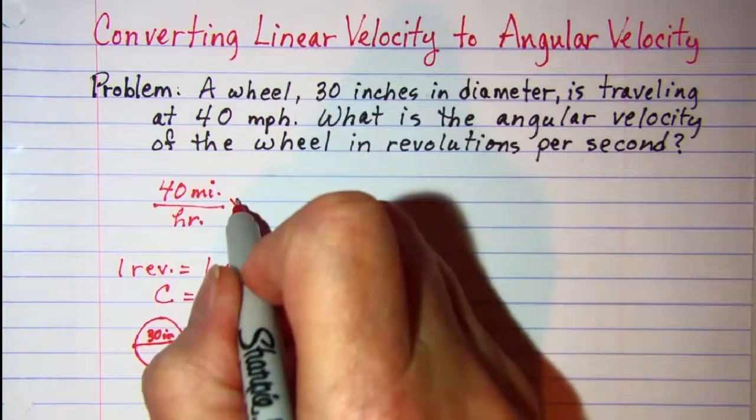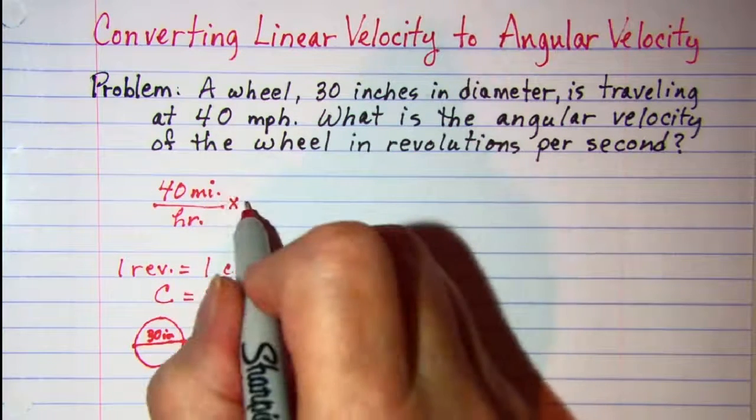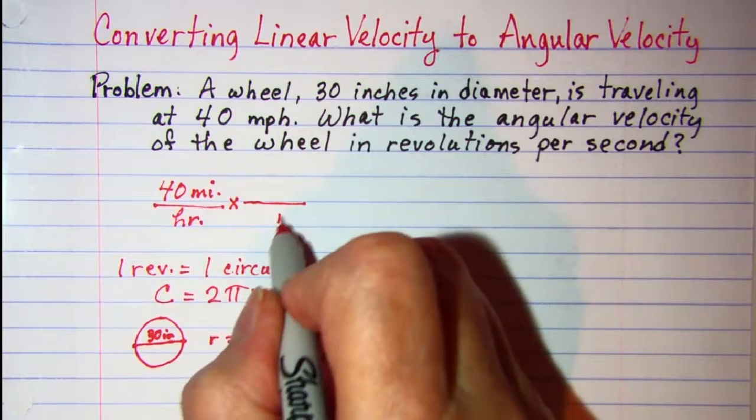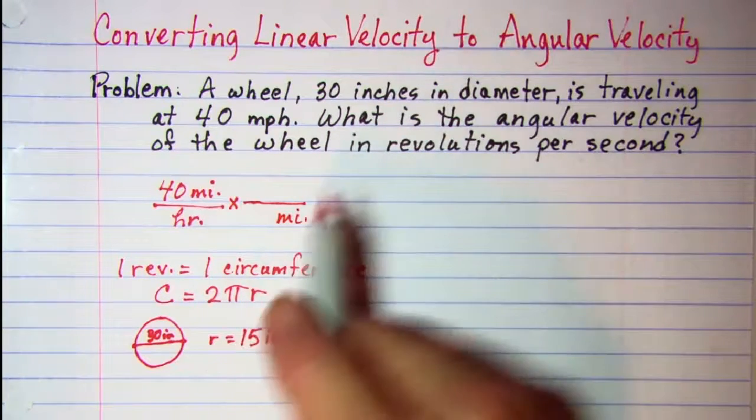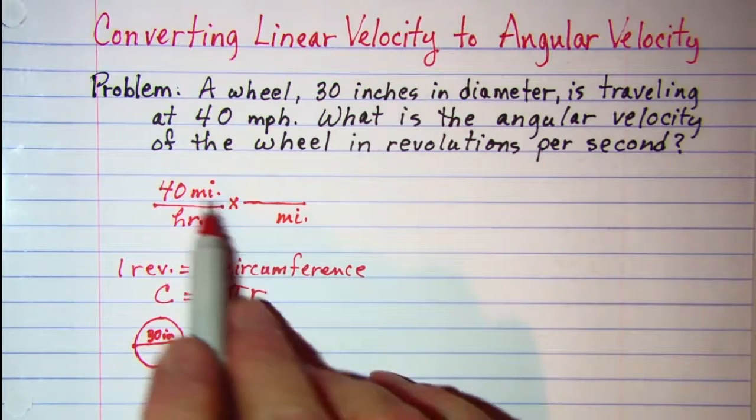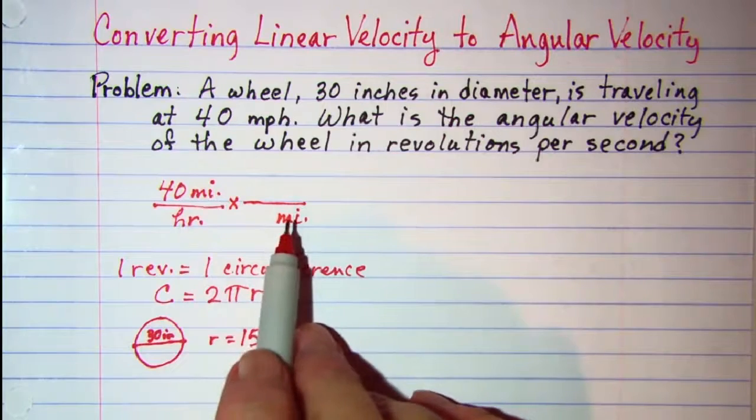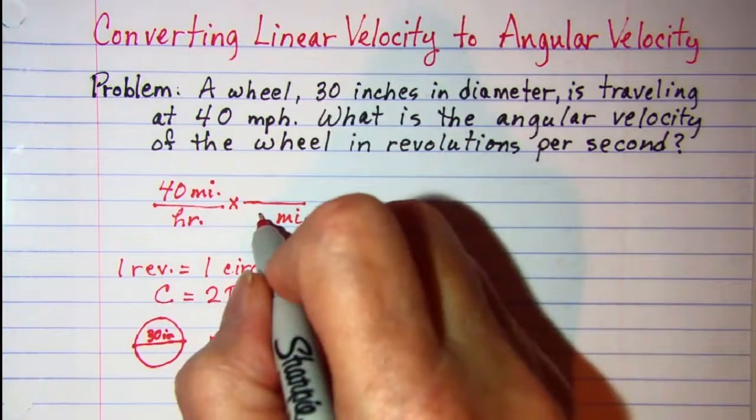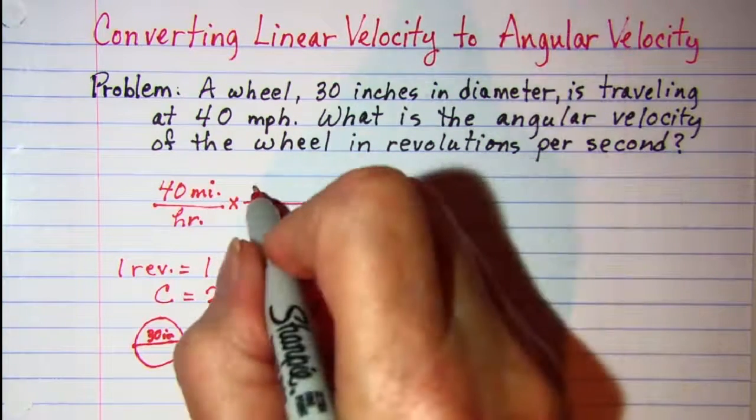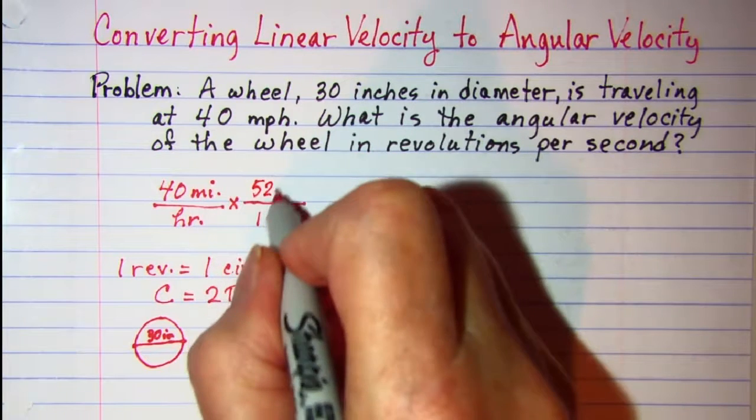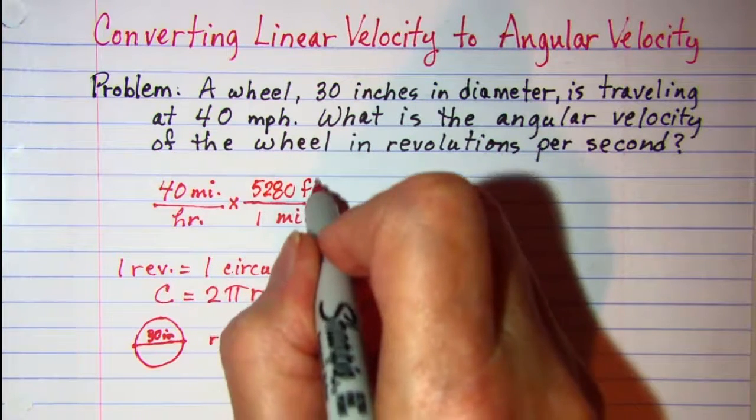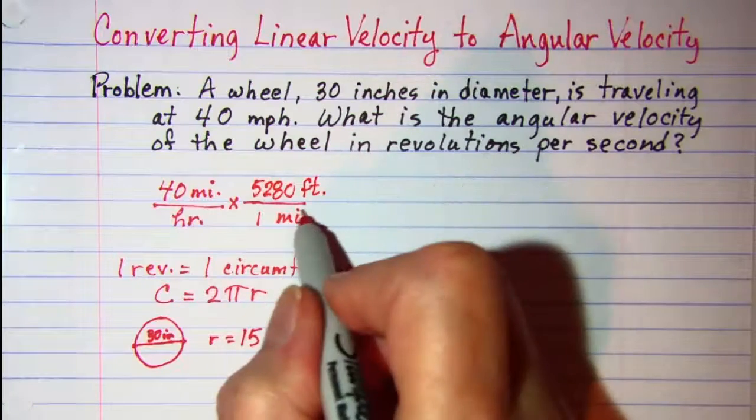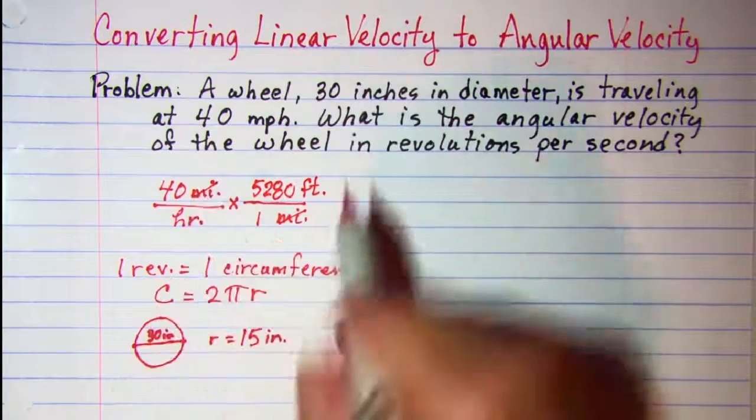So let's get rid of the unit miles. We'll do that by putting miles in the denominator. So these words will cancel. And we know 1 mile is 5,280 feet. Let me go ahead and cancel the word miles off.